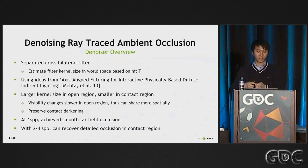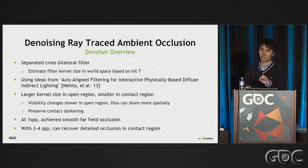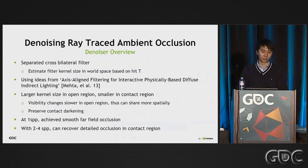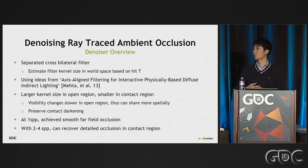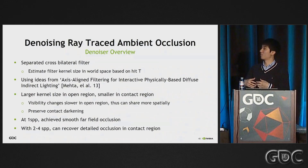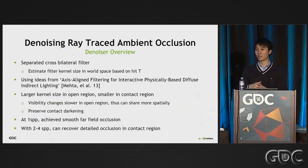So we can apply a larger filter in open regions and a smaller filter in the contact region. That is actually quite effective at preserving all the fine contact hardening details — high-frequency contact details in the contact region — which is something we want to preserve in our denoiser. The results shown use two samples per pixel. One sample per pixel also works pretty well, especially for far-field occlusion, but for near-field contact we need at least two samples per pixel to reconstruct that well.